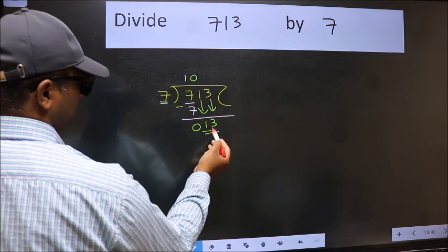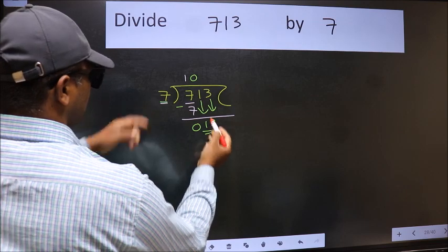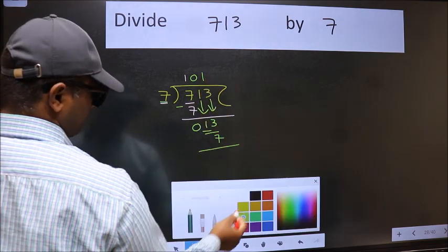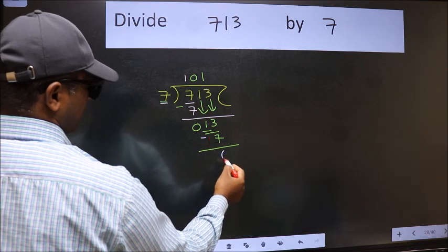Now 13. A number close to 13 in the 7 table is 7 twice 14, so we use 7 twice. Now we should subtract. We get 6.